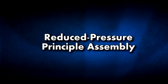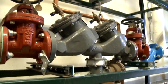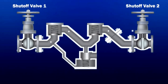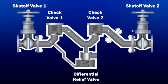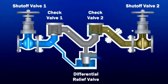Reduced pressure principal backflow preventers, or RP, provide maximum protection against back pressure and back siphonage conditions. This device consists of two spring-loaded check valves with a pressure differential relief valve located between the checks. Water flows into the first check valve. As the first check opens, it fills the reduced pressure zone and the top of the diaphragm at the relief valve at a minimum of 2 PSIG. If there is back pressure, backflow, or back siphonage, both checks will close and the relief valve will open, venting water to the atmosphere.